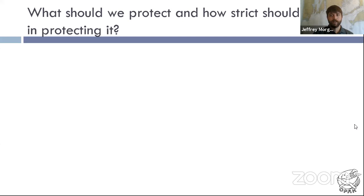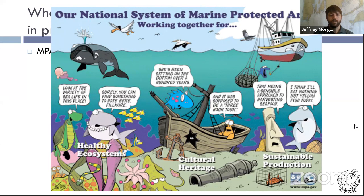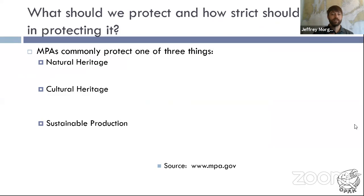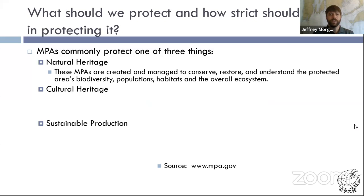What should we protect and how strict should we be? There are three categories that marine protected areas fit into: healthy ecosystems, cultural heritage, and sustainable production. Our natural heritage is what everyone tends to think of when thinking about protecting the ocean — biodiversity, habitat, ecosystem: fish, whales, plankton, coral, the natural things in the ecosystem.